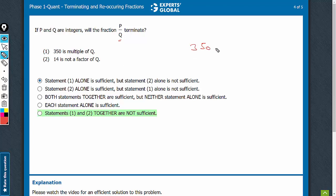350 is a multiple of Q. So 350 is equal to Q into some integer, let's say K.